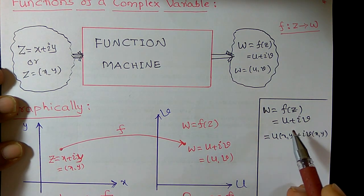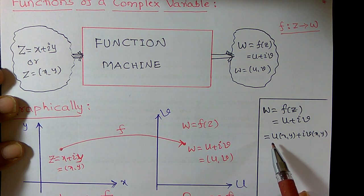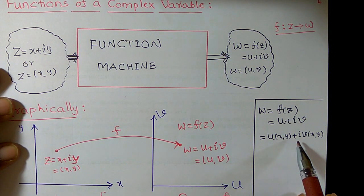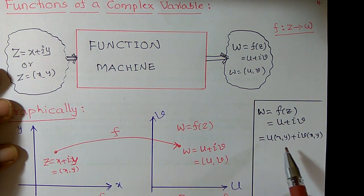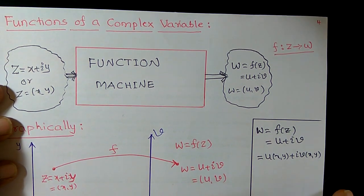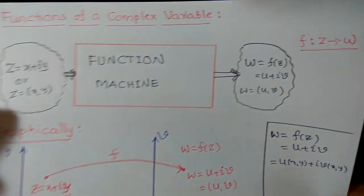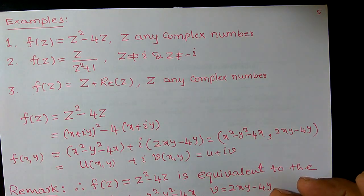So w = f(z) = u + iv, or sometimes we can write down u(x,y) + i v(x,y). It means u and v are functions of two real numbers, x and y.